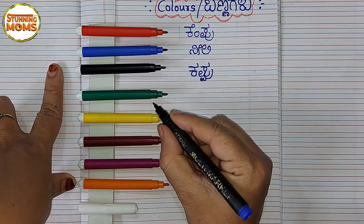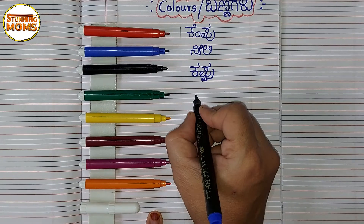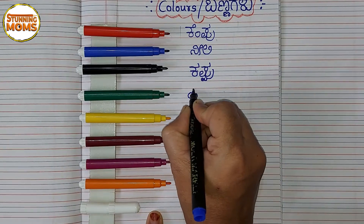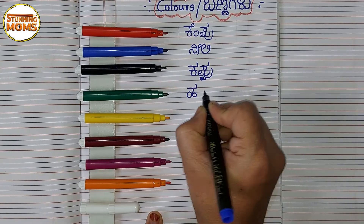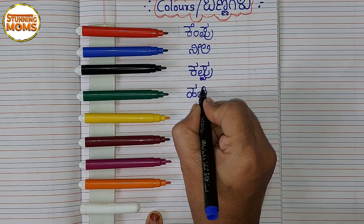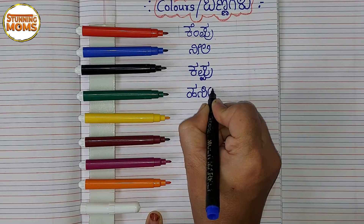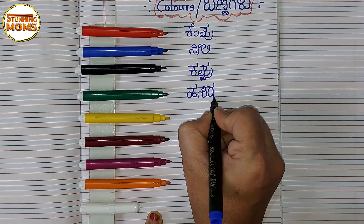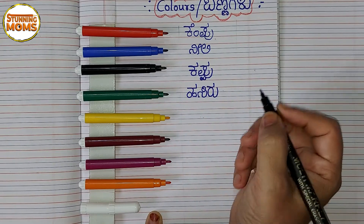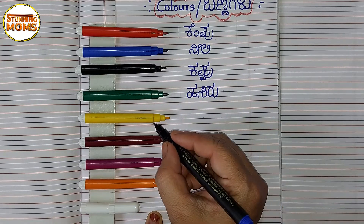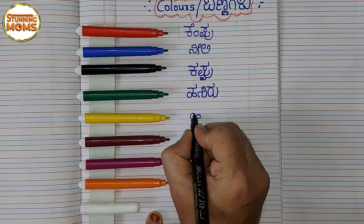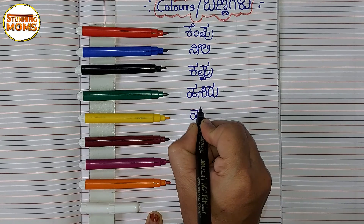Green color — hasiru. Hasiru banna. Yellow color — haladi.